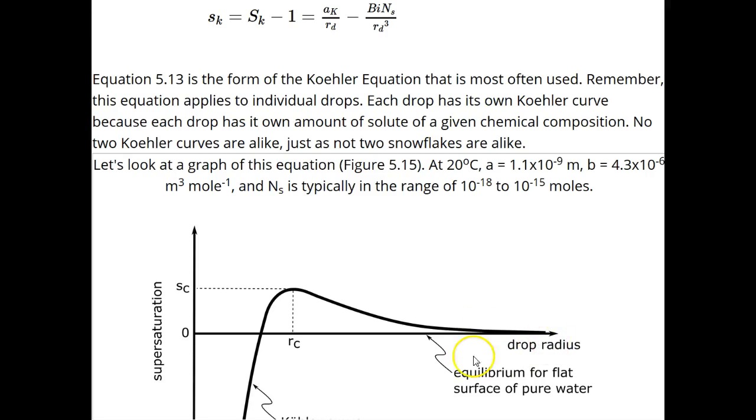Note that each drop has its own Kohler curve. The supersaturation of the environment, which can be positive by radiative cooling, mixing, or adiabatic ascent, determines what will happen to the drop.